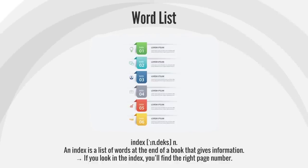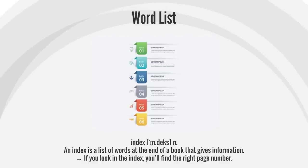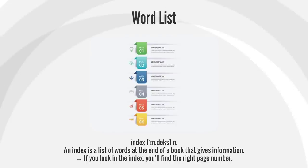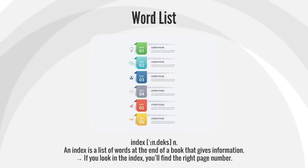Index. An index is a list of words at the end of a book that gives information. If you look in the index, you'll find the right page number.